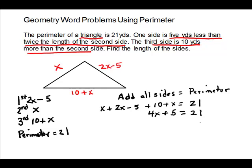Now we have a standard two-step equation. On the side with x, take off the 5 — it's added, so we subtract. Subtracting on the left cancels it, and subtracting 5 on the right gives us 16. Then we divide out the 4 on both sides. 16 divided by 4 gives us x equals 4. That's the answer for the second side.